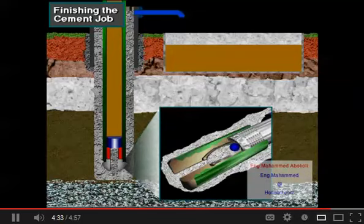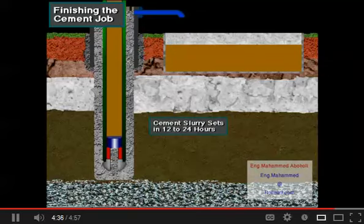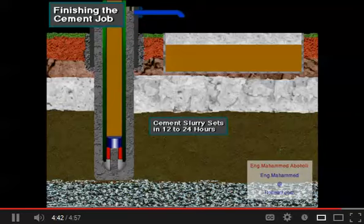Depending on hole conditions and the type of cement used, the cement slurry hardens or sets up firmly, generally within 12 to 24 hours.